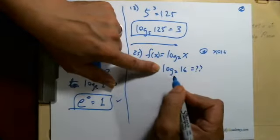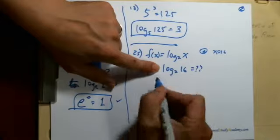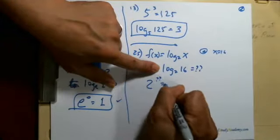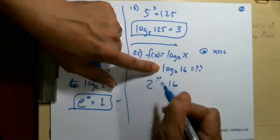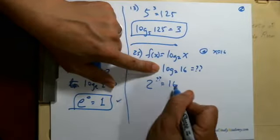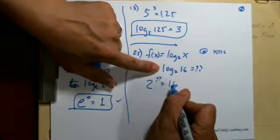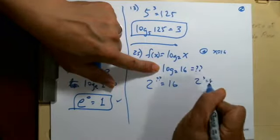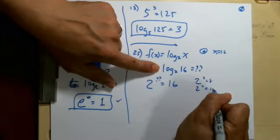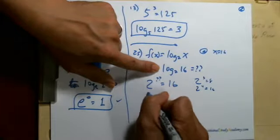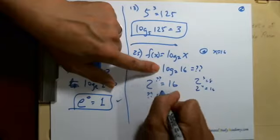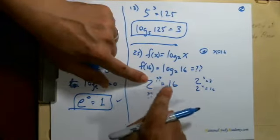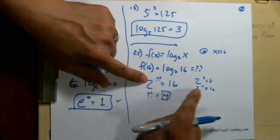Since it's in the logarithmic state, we're going to change it to the exponential state. So how do we do that? We start with the base. The base is here. 2 to what power? Question mark equals 16. Well, we can say 2 to the first is 2, 2 to the second is 4, 2 to the third power equals 8, 2 to the fourth power equals 16. Oh, it must be that question mark must equal 4.